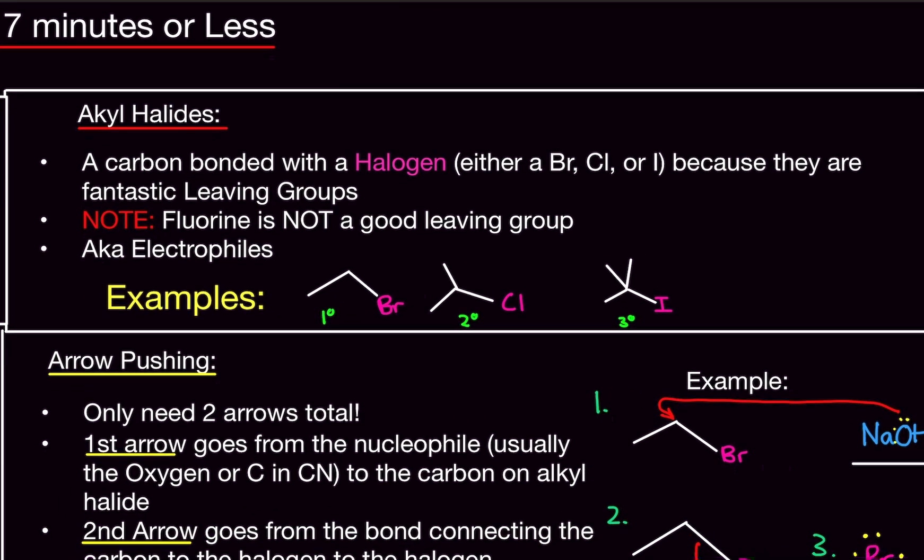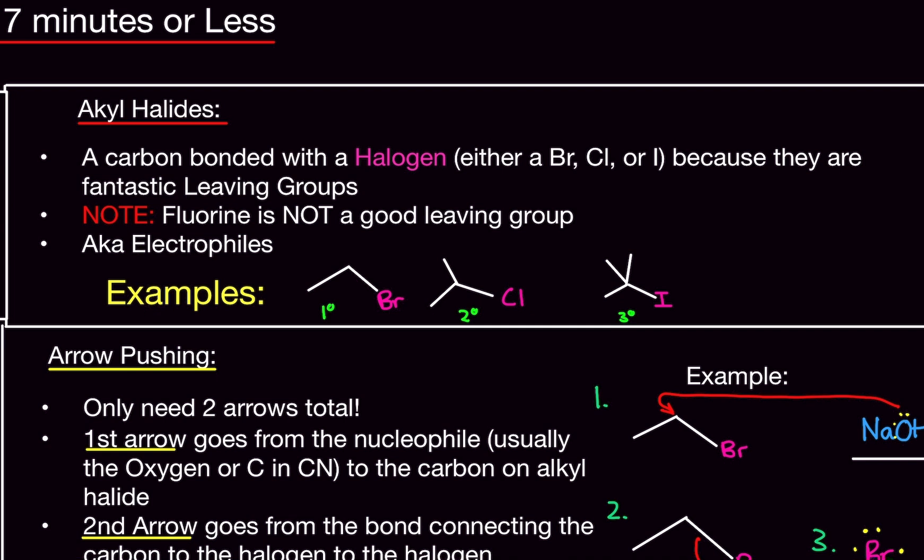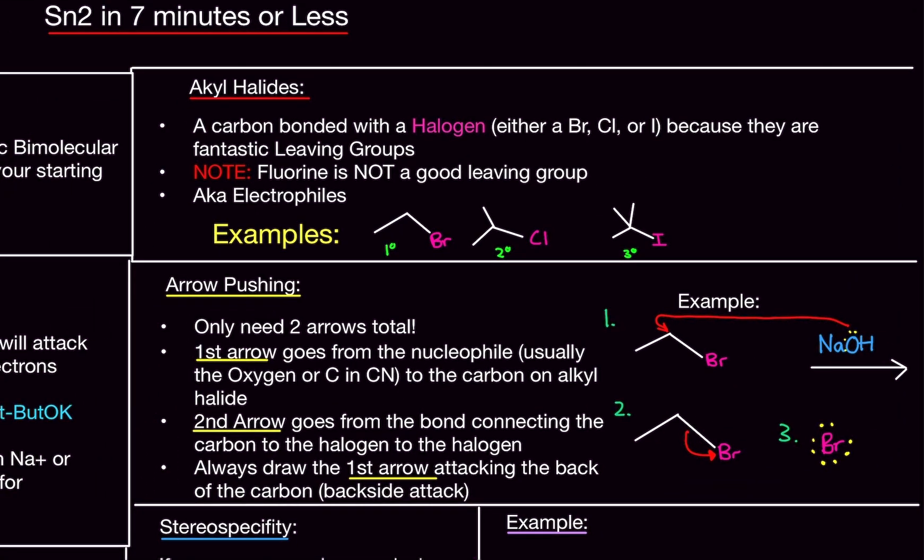What is an alkyl halide? An alkyl halide is basically a carbon bonded with a halogen. This could be a bromine, chlorine, or iodine, because they are fantastic leaving groups. Pretend you go to work and you really hate your job. You go to work and you immediately just want to leave. That is what bromine, chlorine, and iodine are. They are part of the reaction, but they just want to leave immediately. They are fantastic leaving groups. That is the purpose of alkyl halides.